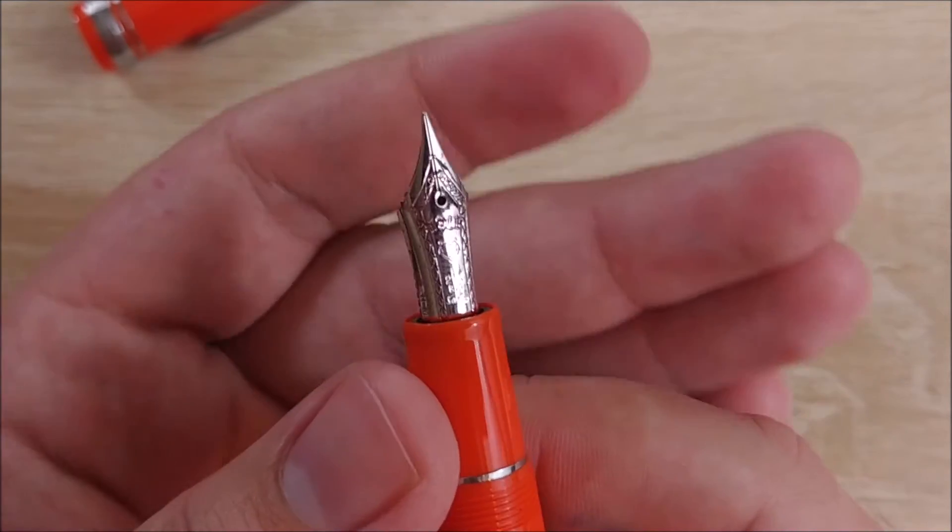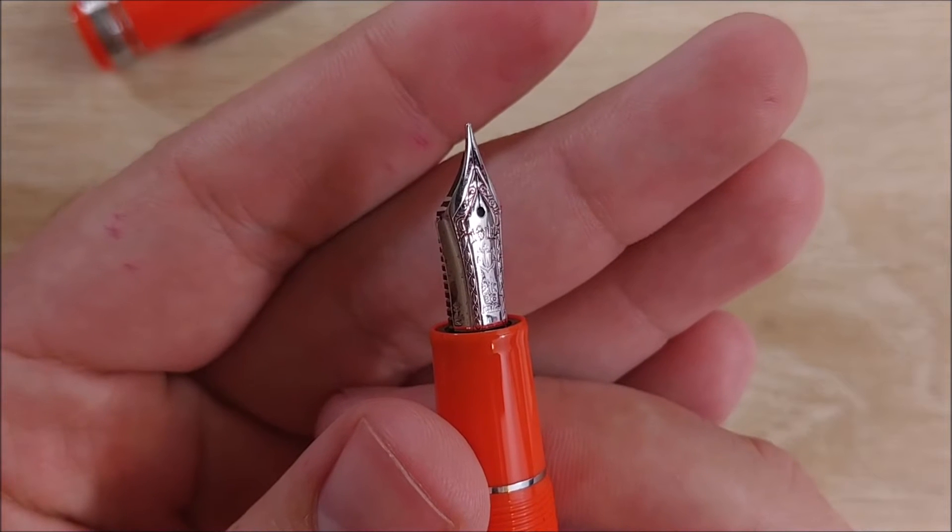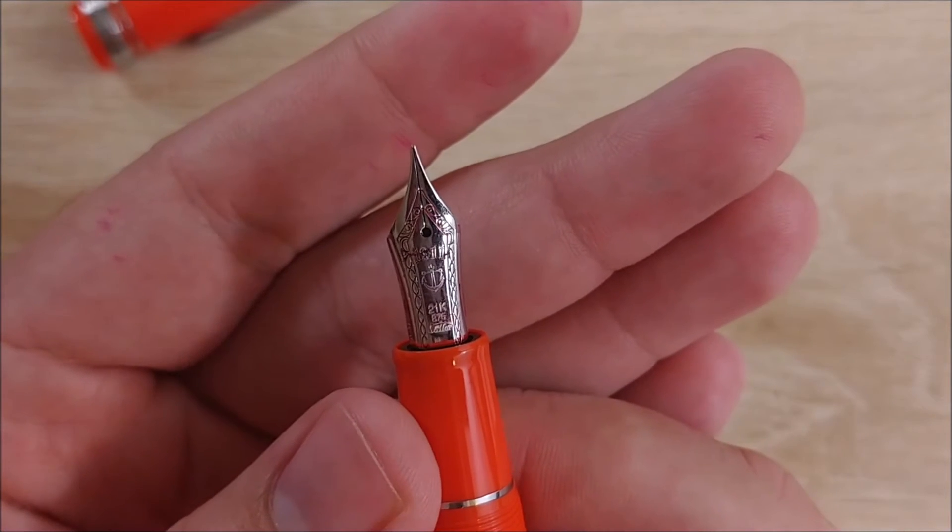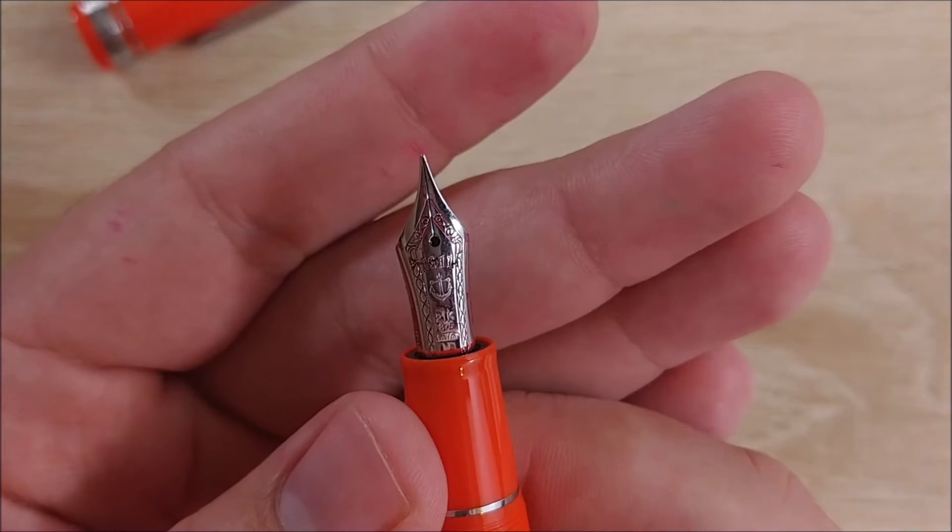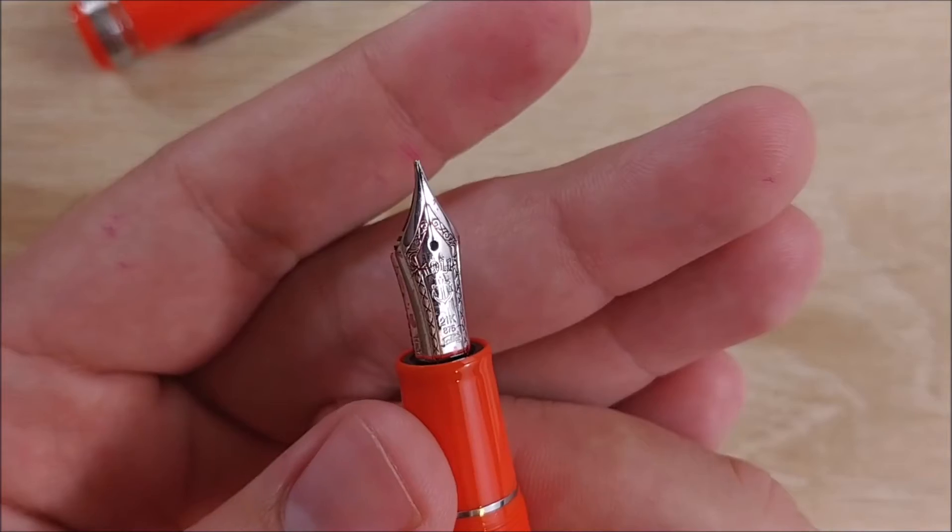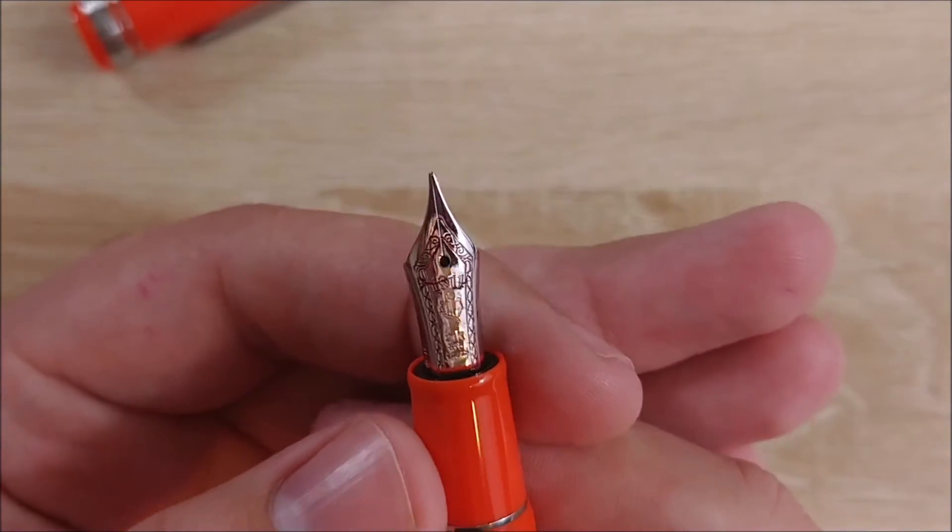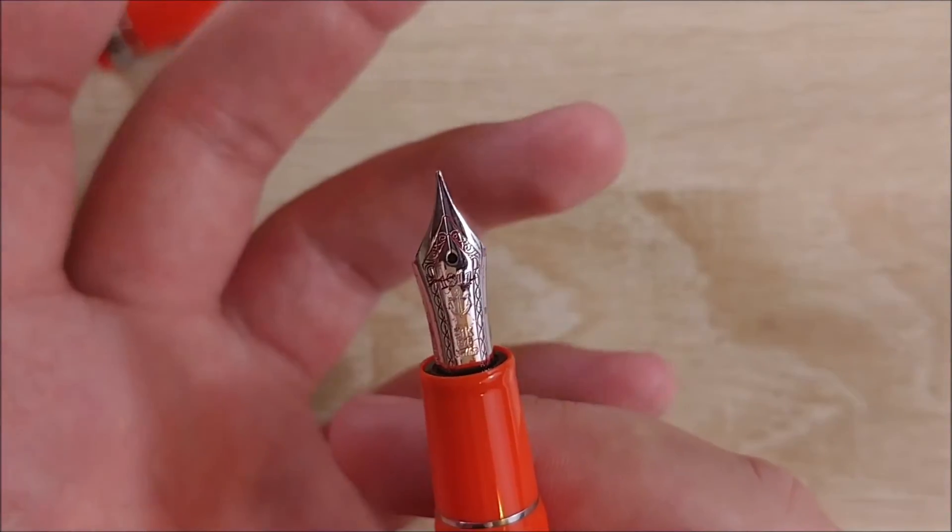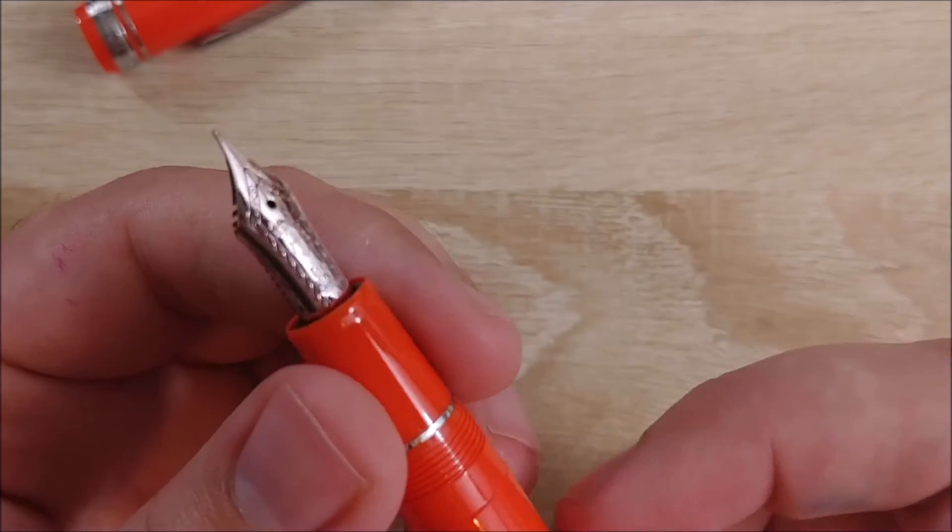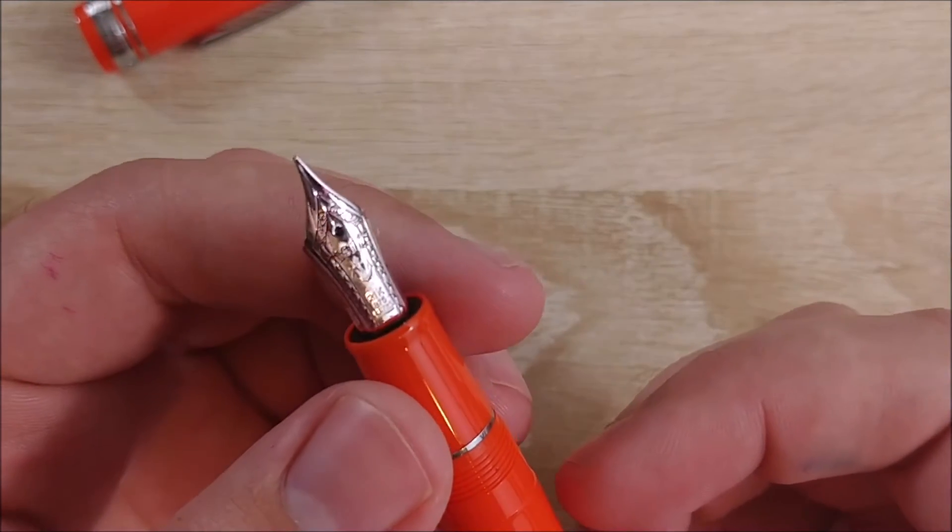It also has quite a bit of give to it because it's a 21-carat nib. It is not a flex nib. You will spring this if you try to push it. The design is also very nice. You can see it has the anchor imprint, 21K, and the percentage of gold. And it's a sailor at the bottom. It has this beautiful pattern going up each side to meet in the middle. Very, very nice nib. It's beautiful, especially when it's covered in ink.